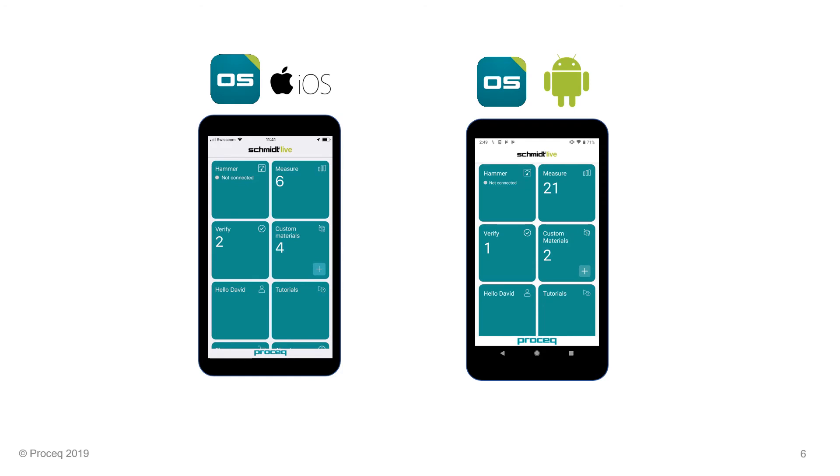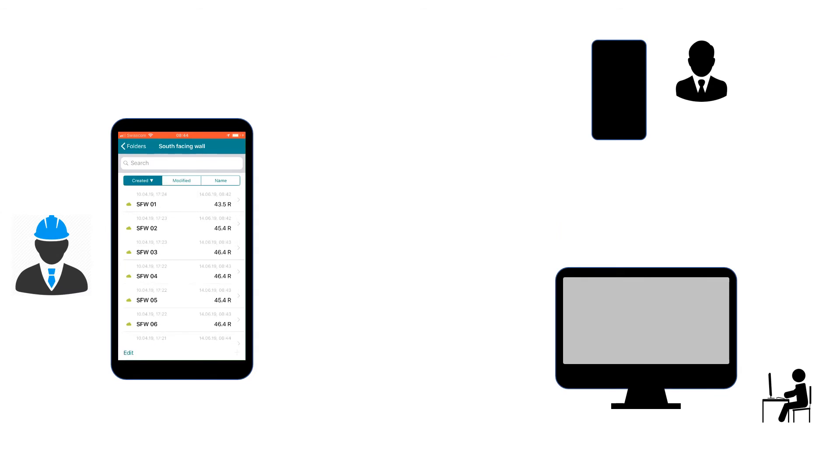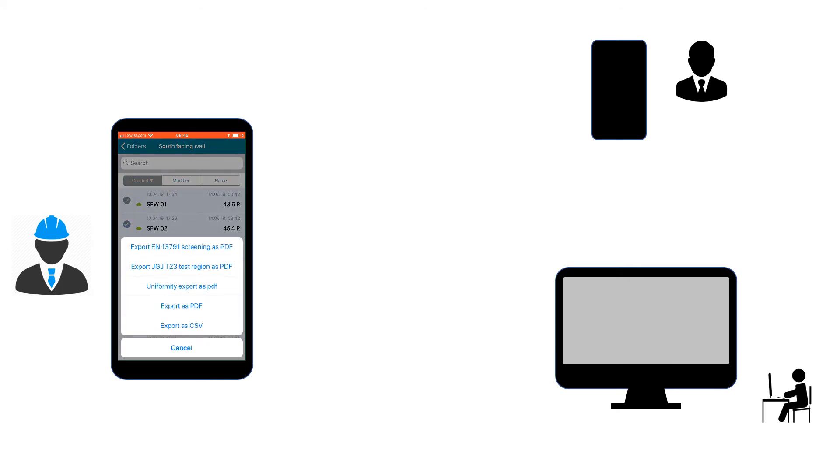This method is integrated into the Schmitt Live app both in the iOS and Android versions. We start by selecting our measurements. From here we can generate the report. We begin by selecting all of the measurements in the test region and then export EN 13791.